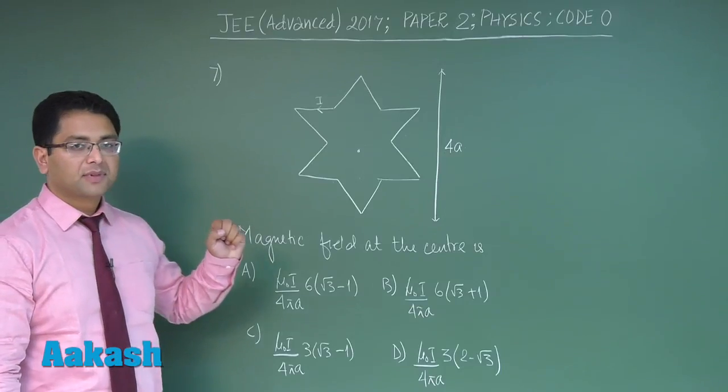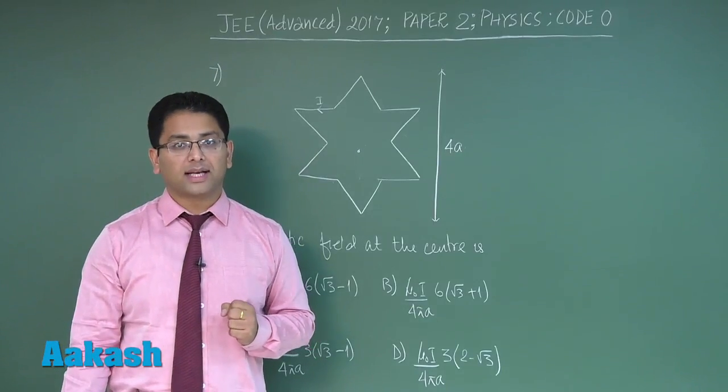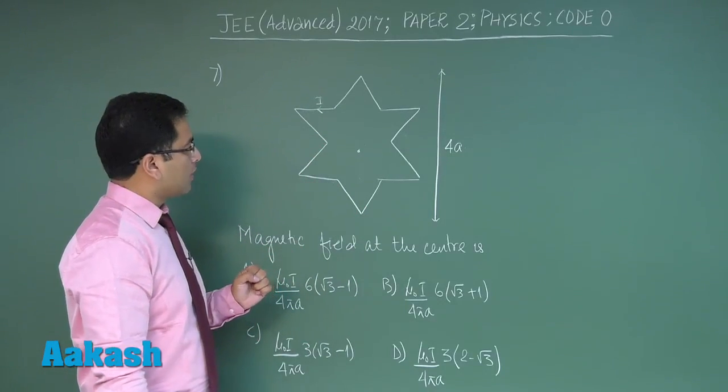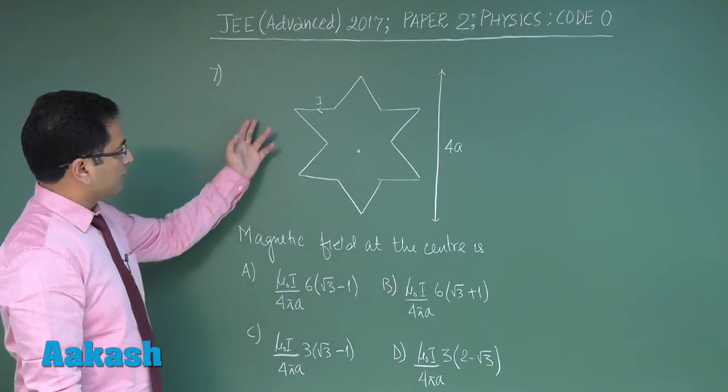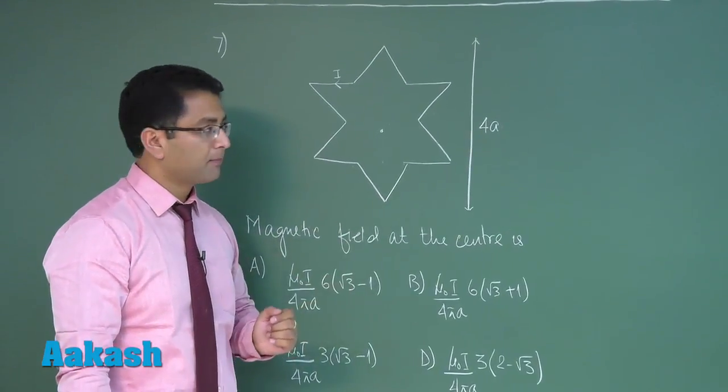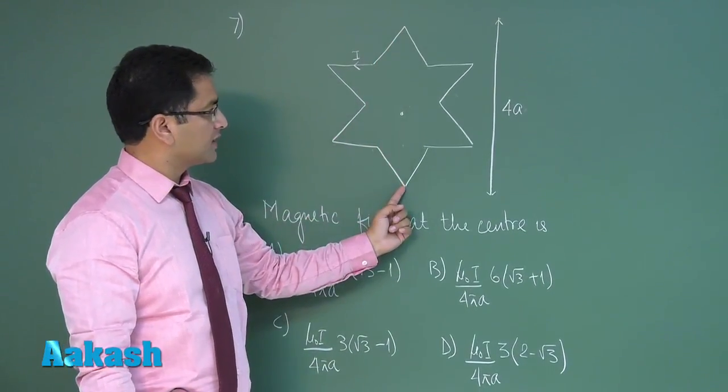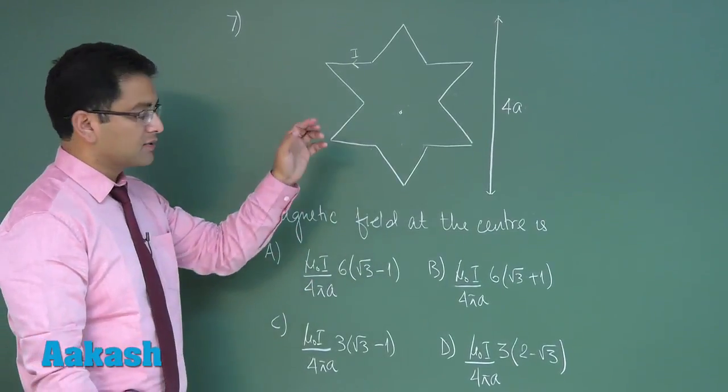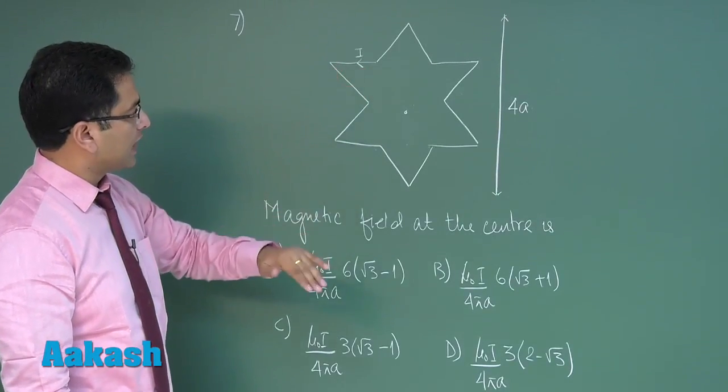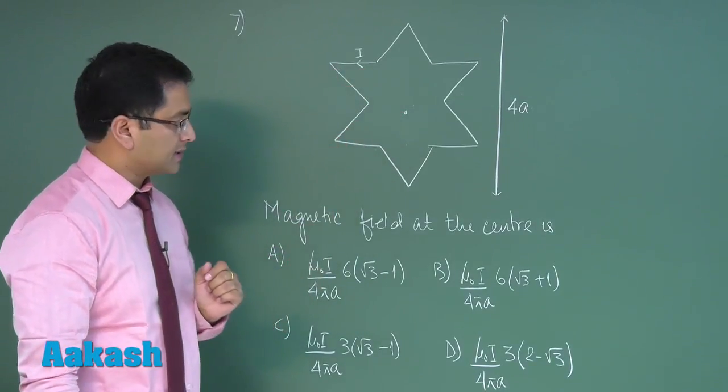Question number 7, the last question of section 1, and this is a very straightforward question from magnetism. A symmetric structure with 12 edges is given - this vertex to this vertex distance is 4a, meaning circum radius would be 2a. For this given current I, we have to calculate the magnetic field at this point.